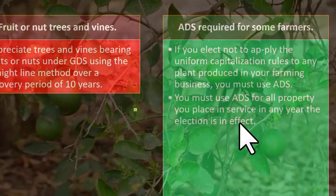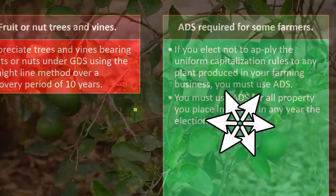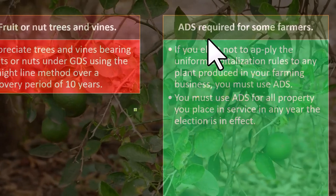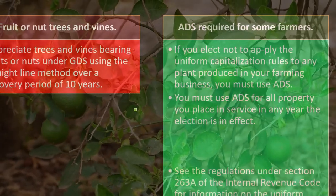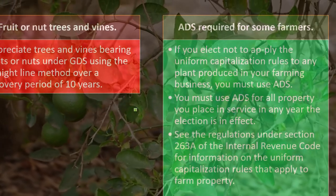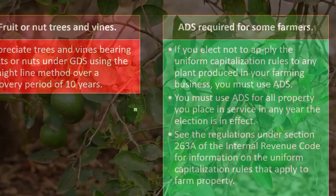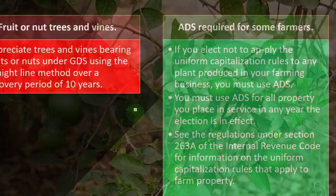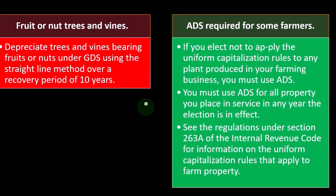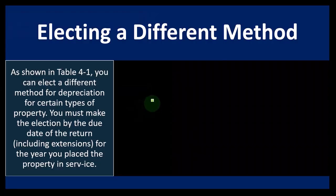You must use ADS for all property you place in service in any year the election is in effect. See the regulations under section 263A of the Internal Revenue Code for information on the uniform capitalization rules that apply to farm property.